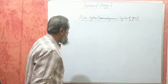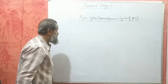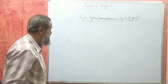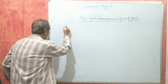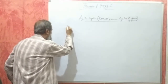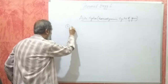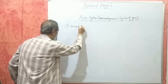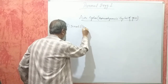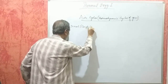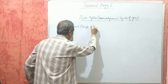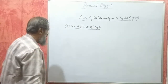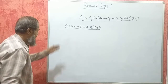In the previous clip, we studied two air cycles: the Carnot cycle and the Otto cycle. Today, we will take up the third one, that is the Diesel cycle, also called the Constant Pressure cycle, and the study of the Dual Combustion cycle.